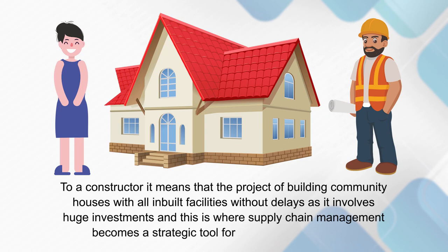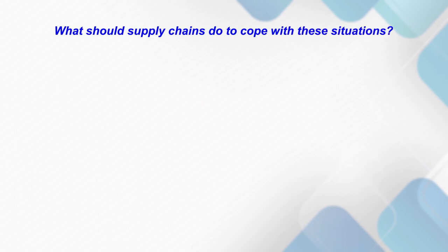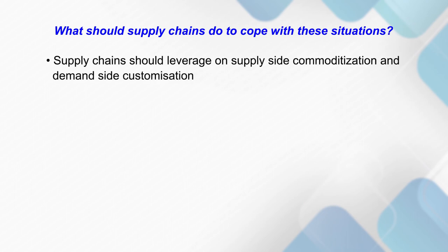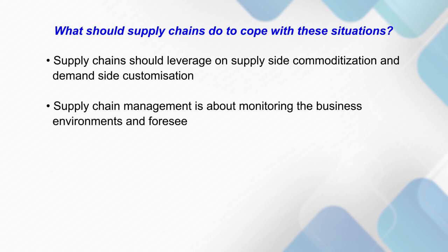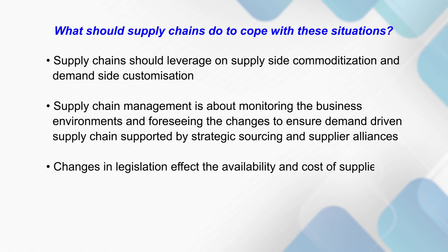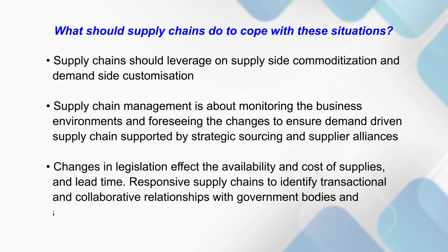To cope with such situations, supply chains should leverage supply-side commoditization and demand-side customization. Supply chain management is about monitoring business environments and foreseeing changes to ensure demand-driven supply chains supported by strategic sourcing and supplier alliances. Changes in legislation affect the availability, cost of supplies, and lead time. Responsive supply chains that identify transactional and collaborative relationships with government bodies and associations lead to competitive advantage.